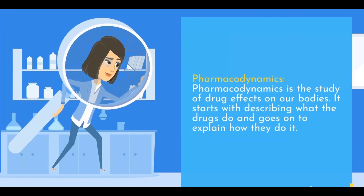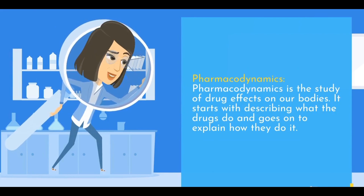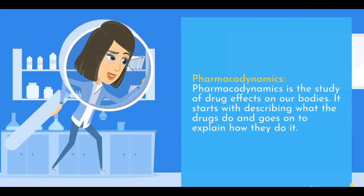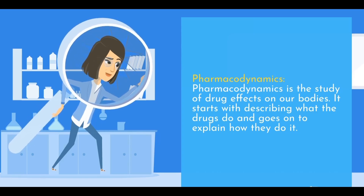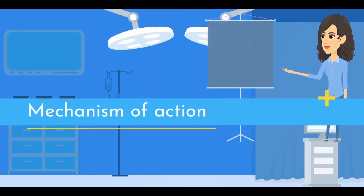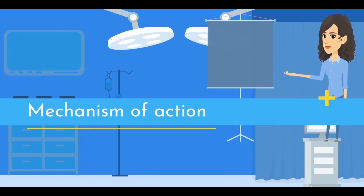Now let's move on to pharmacodynamics — the study of drug effects on our bodies. It starts with describing what the drugs do and goes on to explain how they do it. It includes a few important concepts: dose-response relationship, which is the relationship between the amount of drug given and the strength of its effect; and mechanism of action, which is the way in which a drug interacts with its target to produce an effect.